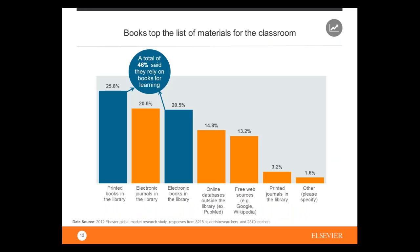Reviews for teachers show that books are actually the preferred way of teaching in the class. Looking at different types of resources — print books in libraries, electronic journals, and electronic books in libraries — print books and electronic books together account for 46% of what educators rely on for learning. That means almost half rely on books, with the rest being other resources.